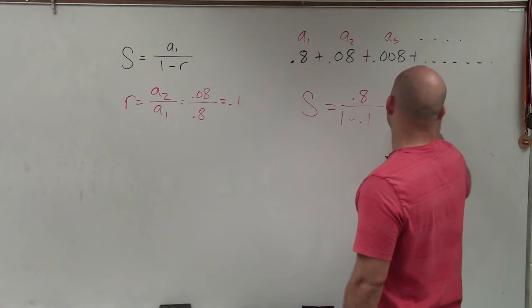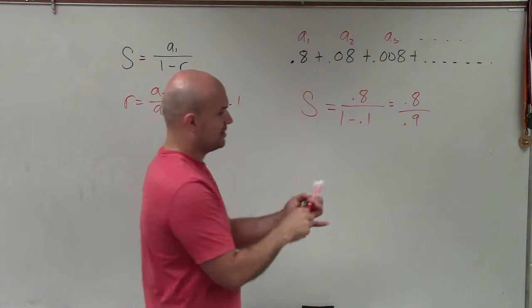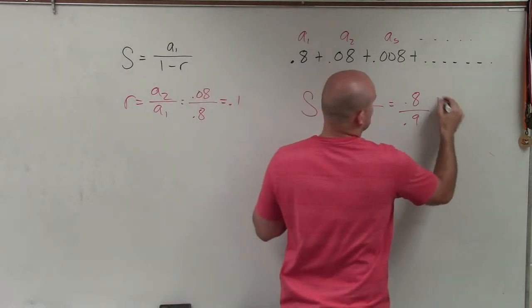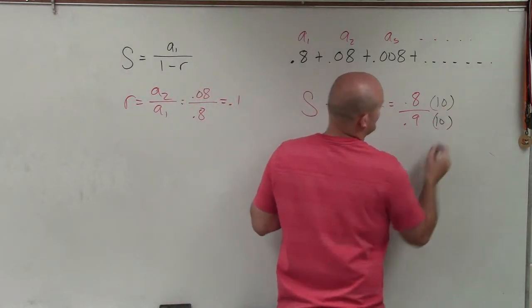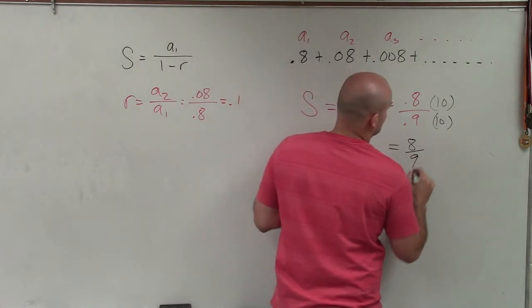Well, that equals 0.8 divided by 0.9. Now, to simplify this, let's just get the decimal point over, so I can produce an equivalent equation by multiplying the same number on top and bottom. So I multiply 10 over 10, and I get my final answer of 8 ninths.